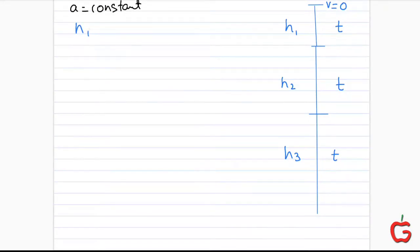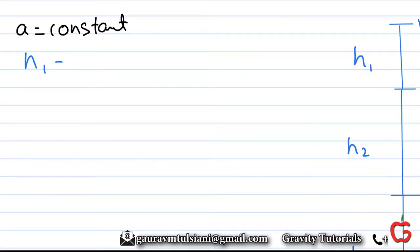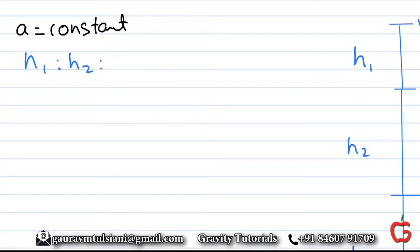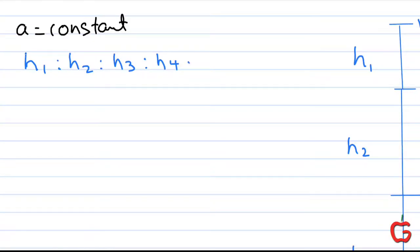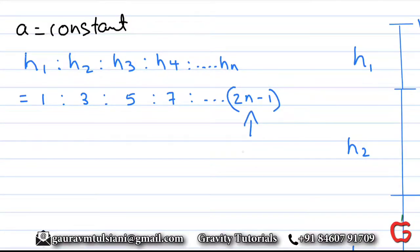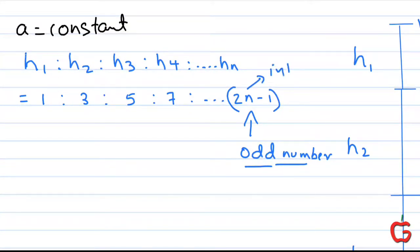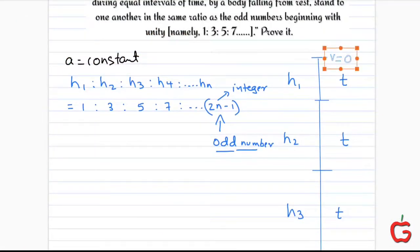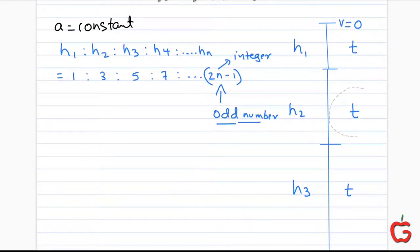The distances are in the ratio of odd numbers. So h1 is to h2 is to h3 is to h4 — this ratio is the ratio of odd numbers: 1 is to 3 is to 5, and in general h_n corresponds to the nth odd number (2n-1). We have to prove this: if the acceleration is constant and the body starts falling from rest, then the distances covered in equal time intervals are in the ratios of odd numbers.